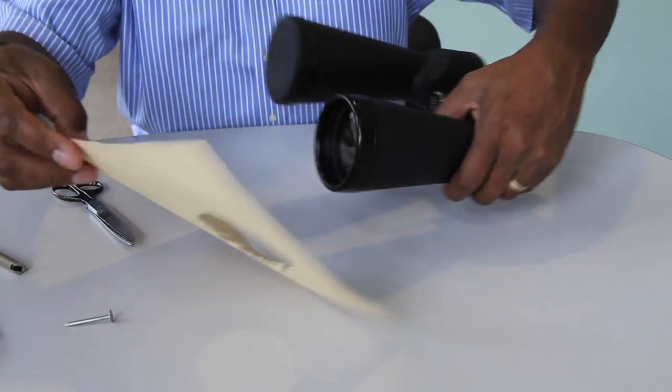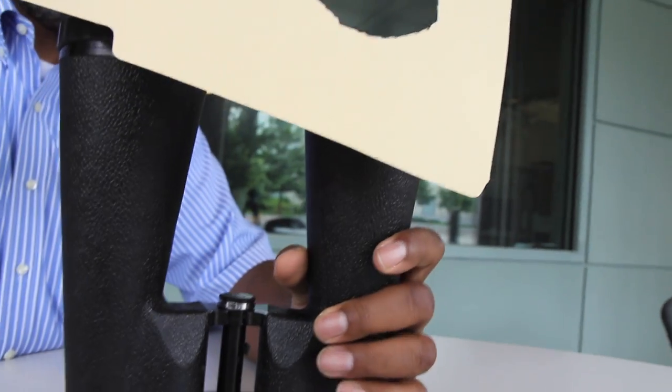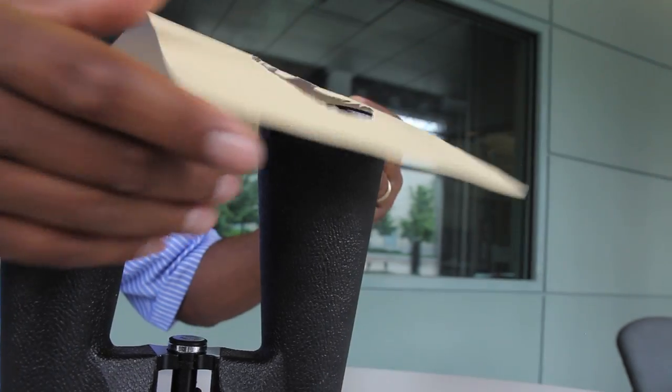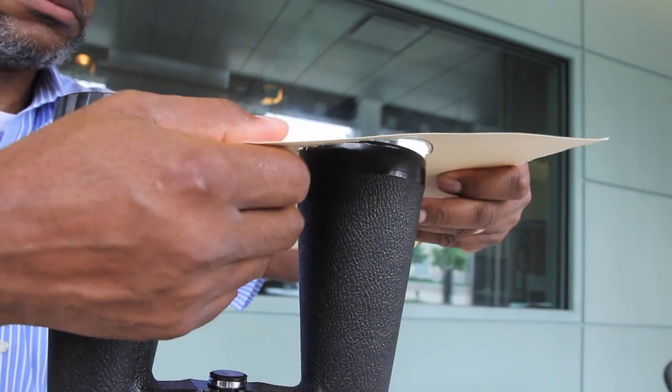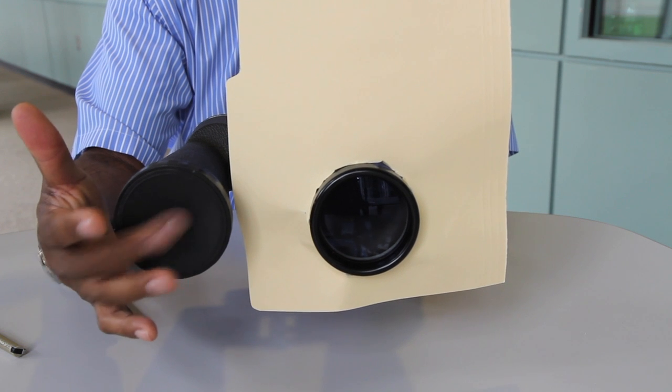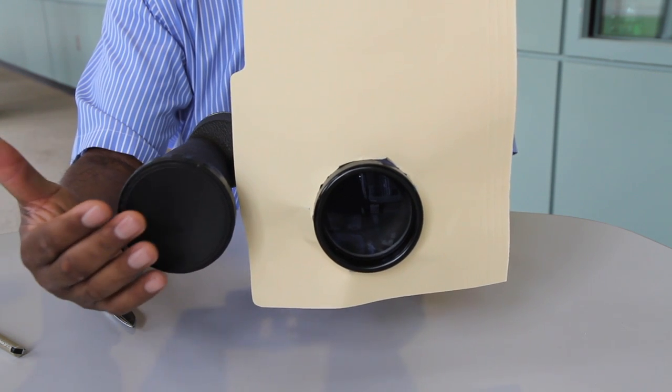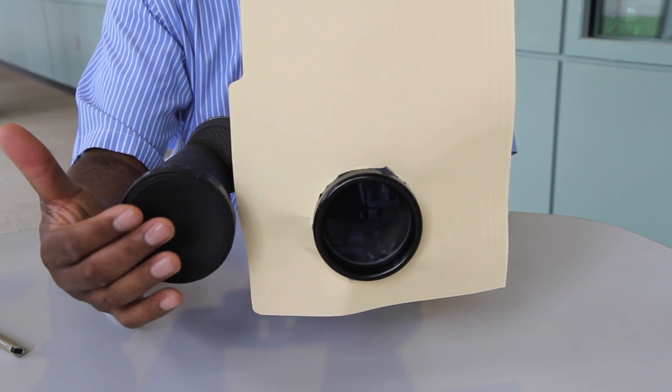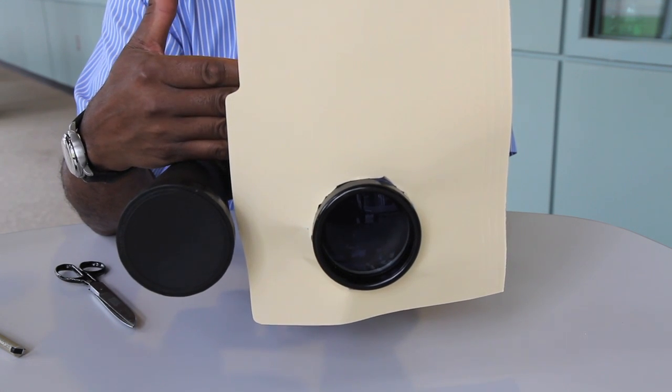Now the next thing we're going to do is we're going to put this right over the ocular of the binocular here. Now you'll notice that I still have the other side of the binocular covered with a lens cap. That's exactly what I want. I don't want any sunlight coming through the second side. I want it coming just through the first side.